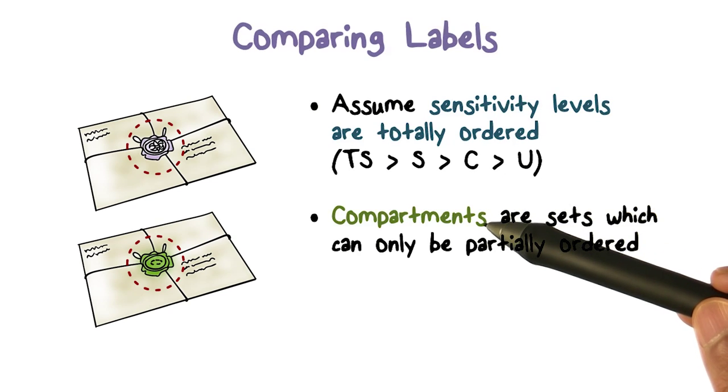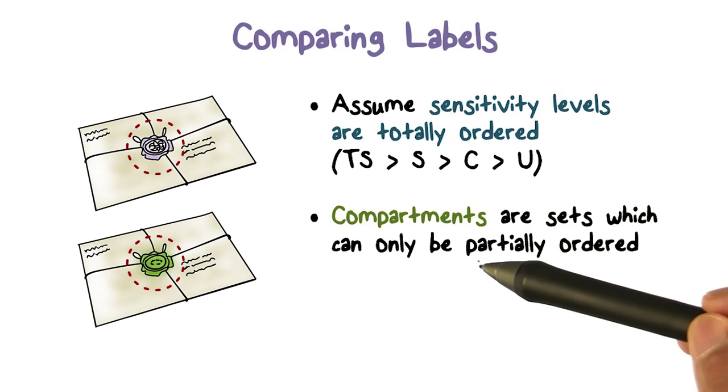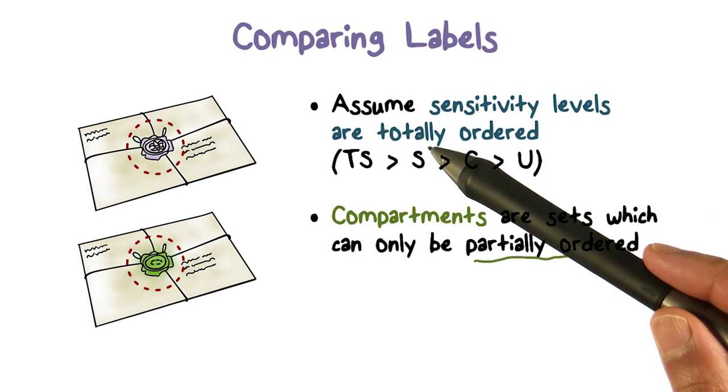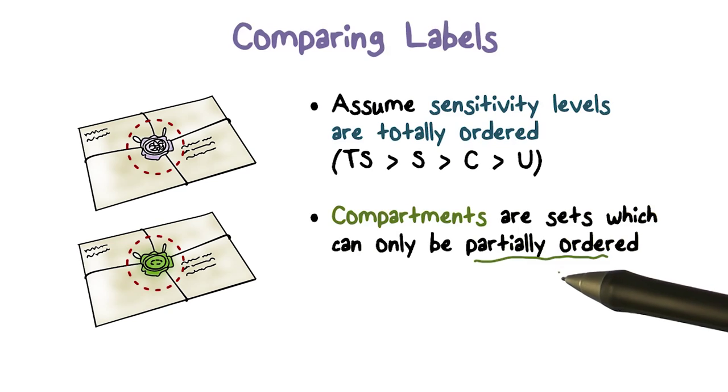When you have sets, the way you compare them is containment or subset. We know that order is a partial order. Total order is when you pick any two and one always is greater than or higher than the other. When you talk about sets, there are going to be pairs of sets where neither one contains the other. They're not going to be ordered, so that's called partial order.